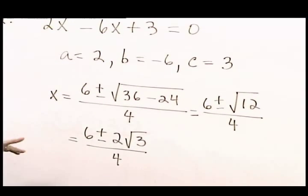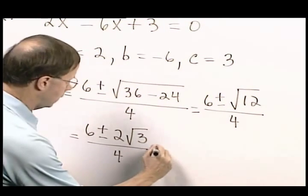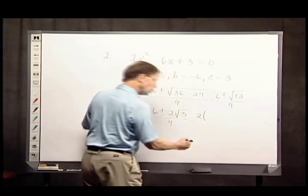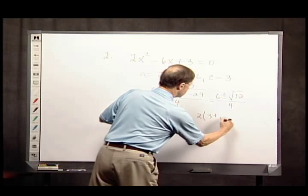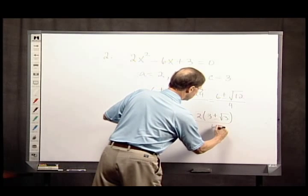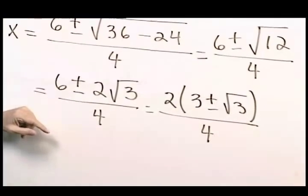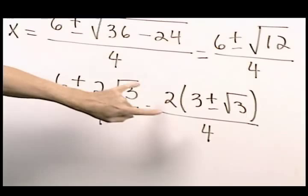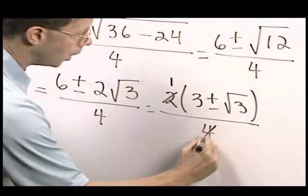Continuing to simplify, I notice I have a common factor of 2 throughout. And so I'm going to factor it out. And finally, I can do some reducing here. This becomes a 1. This becomes a 2.